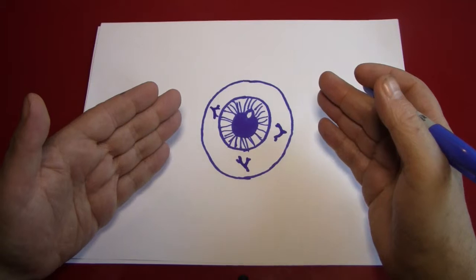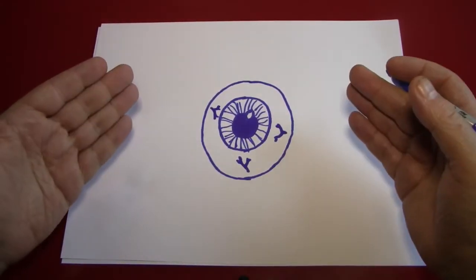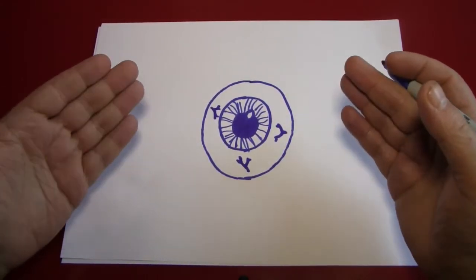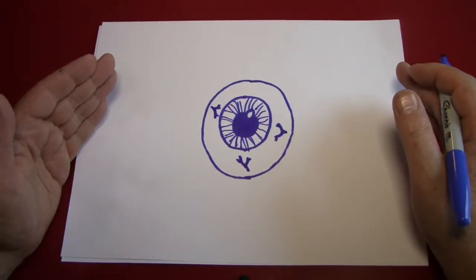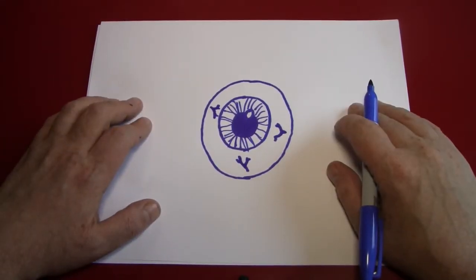Now, you're ready to do whatever you want with this eye. You could put it on the side of a private detective's office door. Or, I don't know. Let's put some wings on it and make it a flying eyeball.